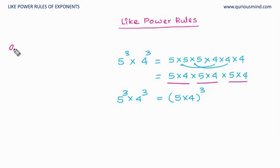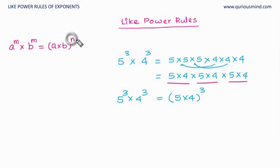So I can write this rule in the general format: a raised to m multiplied by b raised to m — where the base is different but the power is the same — equals (a × b) raised to m. The power remains the same (m) and what changes is that the bases get multiplied together.